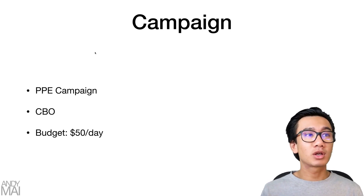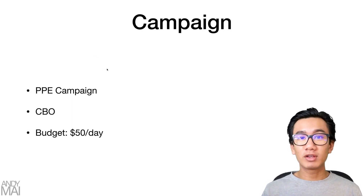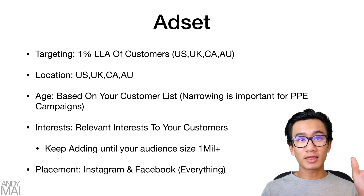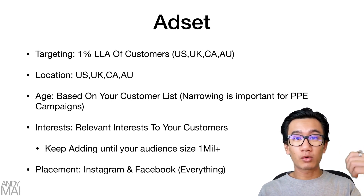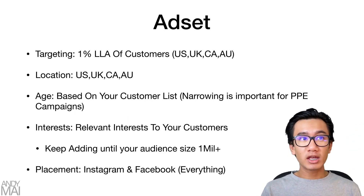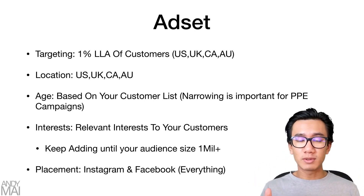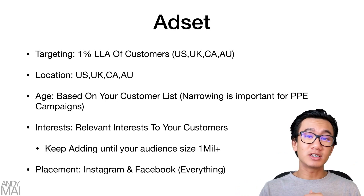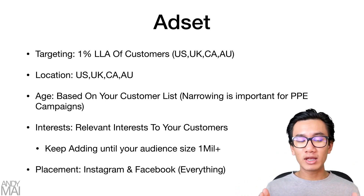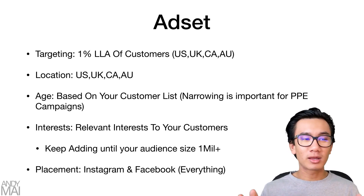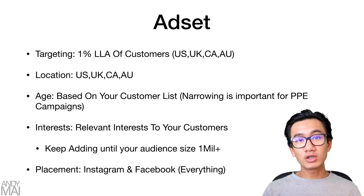Then create the campaign. For this cold audience outreach campaign, you're going to create a PPE campaign — a CBO campaign at fifty dollars per day. At the ad set level, target that one percent lookalike audience you created, set the location to US, UK, Canada, and Australia, and set the age range based on your customer list. Narrowing down the age is very important for PPE campaigns, otherwise Facebook will waste your money on people who are 18 years old.